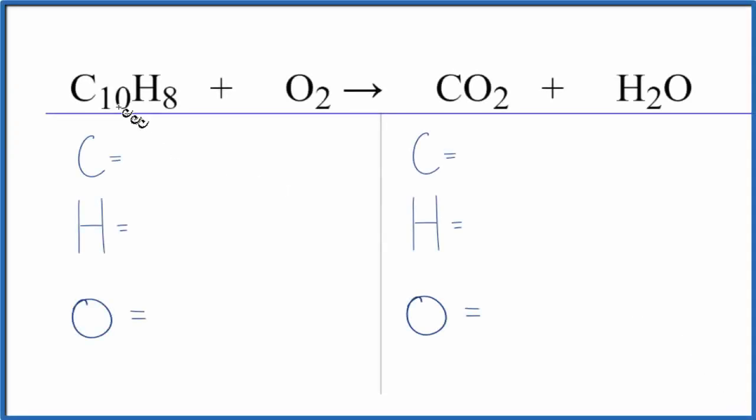In this video, we'll balance the equation for C10H8 plus O2. This is a combustion reaction. We have a hydrocarbon plus oxygen, and we get carbon dioxide and water. This is the formula for naphthalene.